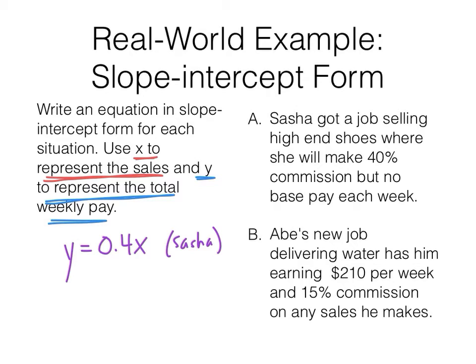Abe's new job delivering water has him earning $210 per week plus 15% commission on any sales. So y equals 210 plus 0.15x. Remember up here that this could just as easily have been 0.40x. If it's easier to think of it that way, keep the zero. We're not overly concerned about extra zeros being added on, unless you stick them in between digits that are already there.